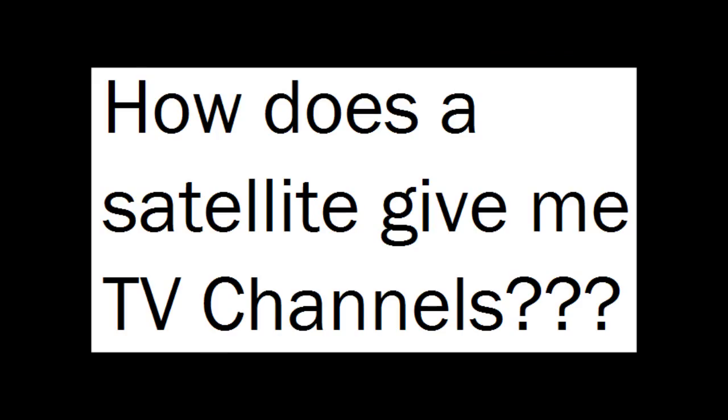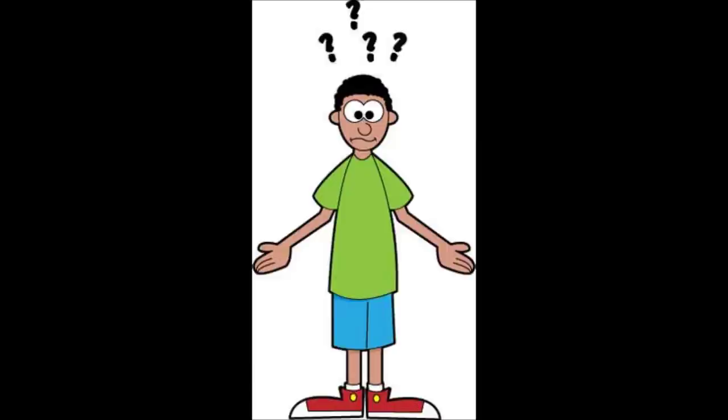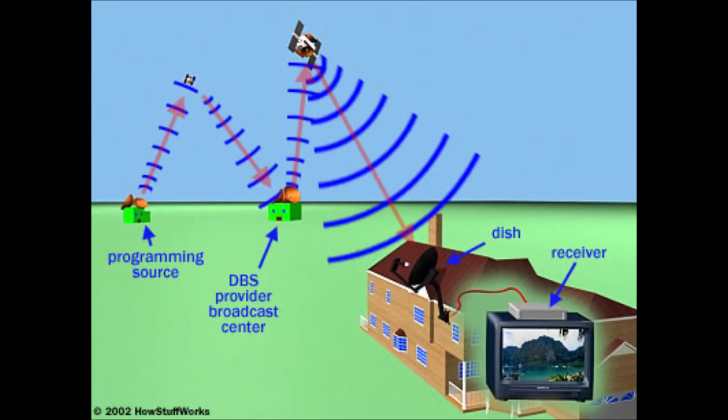So you may be wondering how satellite TV works. It works by a service provider receiving programming from a bunch of different places, then beaming a compressed digital signal containing its entire channel lineup through a satellite dish into the satellite in space.